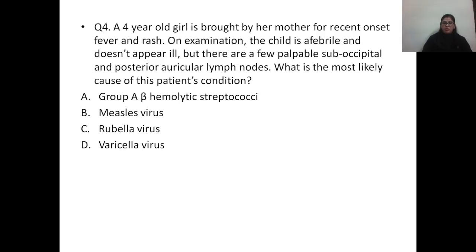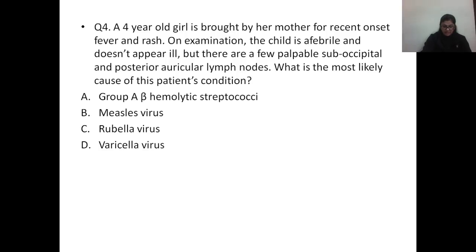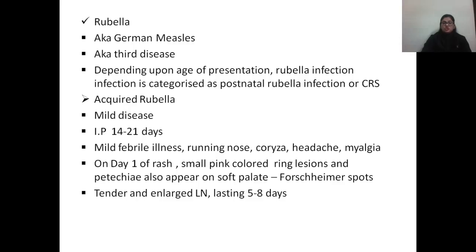Question number four: a four-year-old girl is brought by her mother for recent onset fever and rash. On examination the child is afebrile and doesn't appear ill, but there are a few palpable suboccipital and posterior auricular lymph nodes. Options: A) Group A beta-hemolytic streptococci, B) measles virus, C) rubella virus, D) varicella virus. The correct answer is option C, rubella virus.